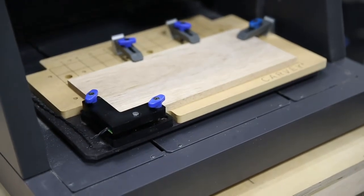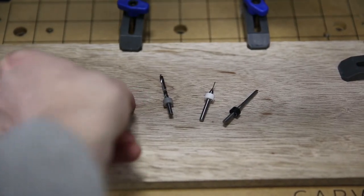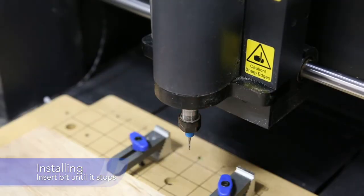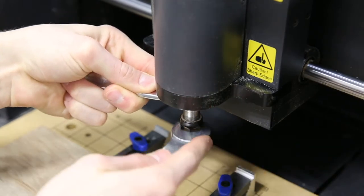Now that the material is secured, we can load our bit in. Today we're going to use a 1/16th fishtail bit. Depending on your project, you may want to use one different than this. Now that the material and bit are properly loaded, let's get to work in ESL.